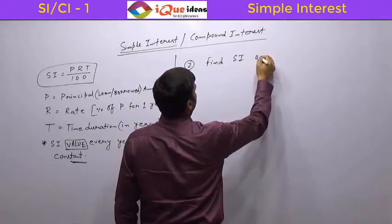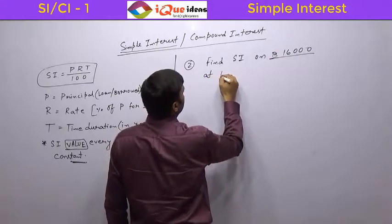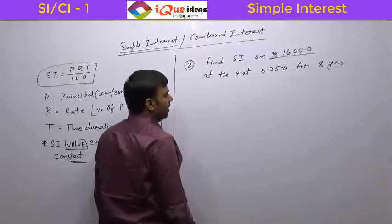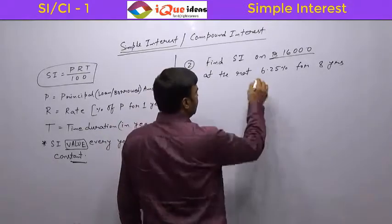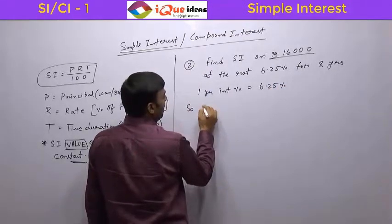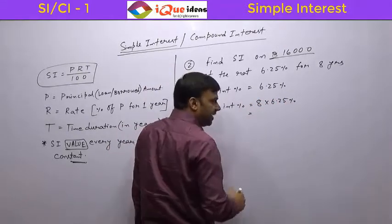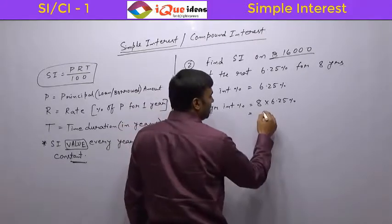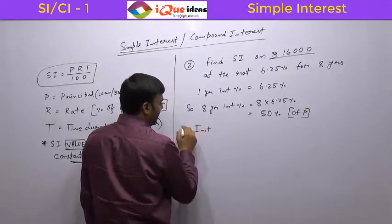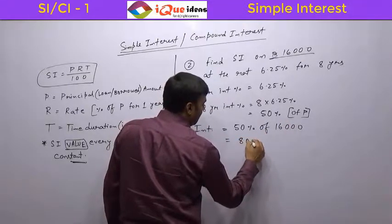Find simple interest on rupees 16,000 at the rate 6.25 percent for 8 years. Here I will use the third method. One year interest percentage is 6.25 percent, so 8 year interest percentage will be 8 × 6.25 percent. Now 8 × 6 is 48, and 8 × 0.25 is 2, so 48 + 2 = 50 percent. So the simple interest value equals 50 percent of 16,000 = 8,000 rupees. Some questions become really easy this way.